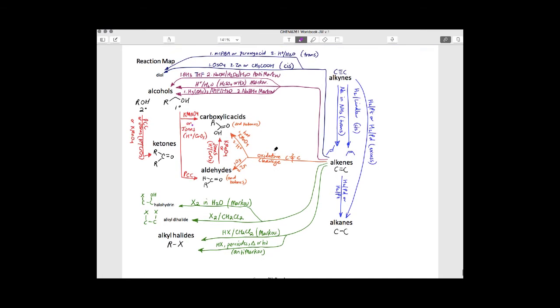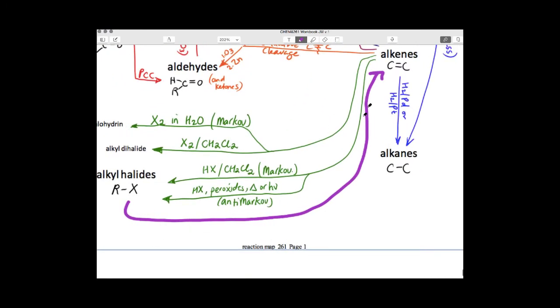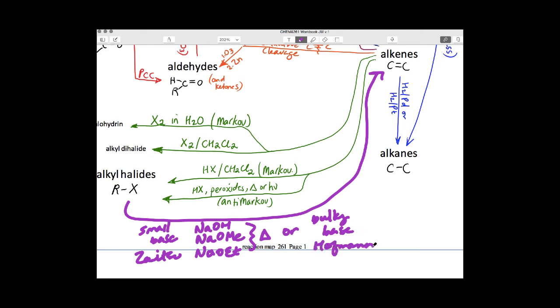Let me show you some common linkages. First, let's add the E2 reaction. Bringing back chapter 7, we have a leaving group with the alkyl halide. To get an E2 reaction forming an alkene, we use a small strong base like sodium hydroxide, sodium methoxide, or sodium ethoxide with heat for the Zaitsev product. Or we could use a bulky base like potassium tert-butoxide with heat to get the Hofmann product.